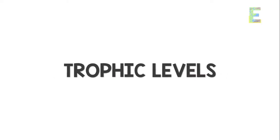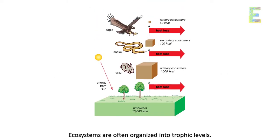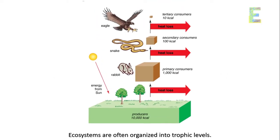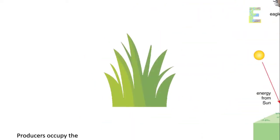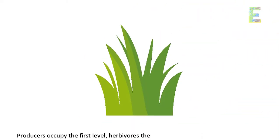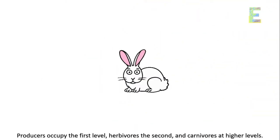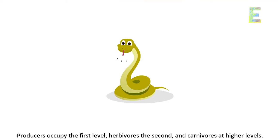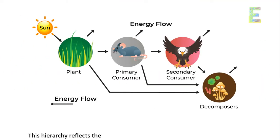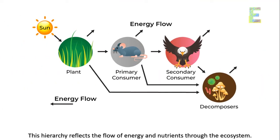Trophic levels — ecosystems are often organized into trophic levels. Producers occupy the first level, herbivores the second, and carnivores at higher levels. This hierarchy reflects the flow of energy and nutrients through the ecosystem.